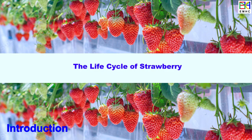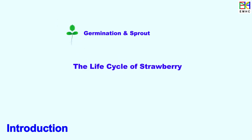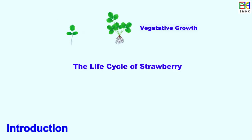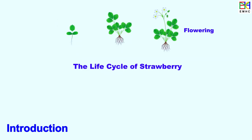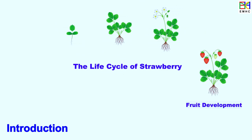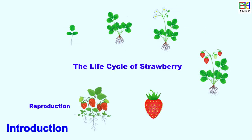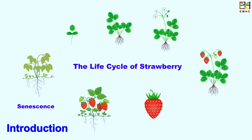The life cycle of strawberry can be divided into the following growth stages: planting, germination and sprout, vegetative growth, flowering and pollination, fruit development, maturity and harvesting, reproduction, and senescence.